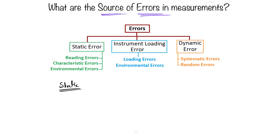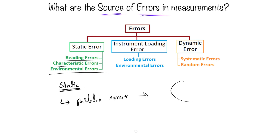Static error has no relation to time variation in measurement. Under static errors, reading errors include parallax errors — while reading the final result on a dial indicator, you must view the dial normal to your eye. If you view it at an inclination, the values might be wrong. That is the parallax error.